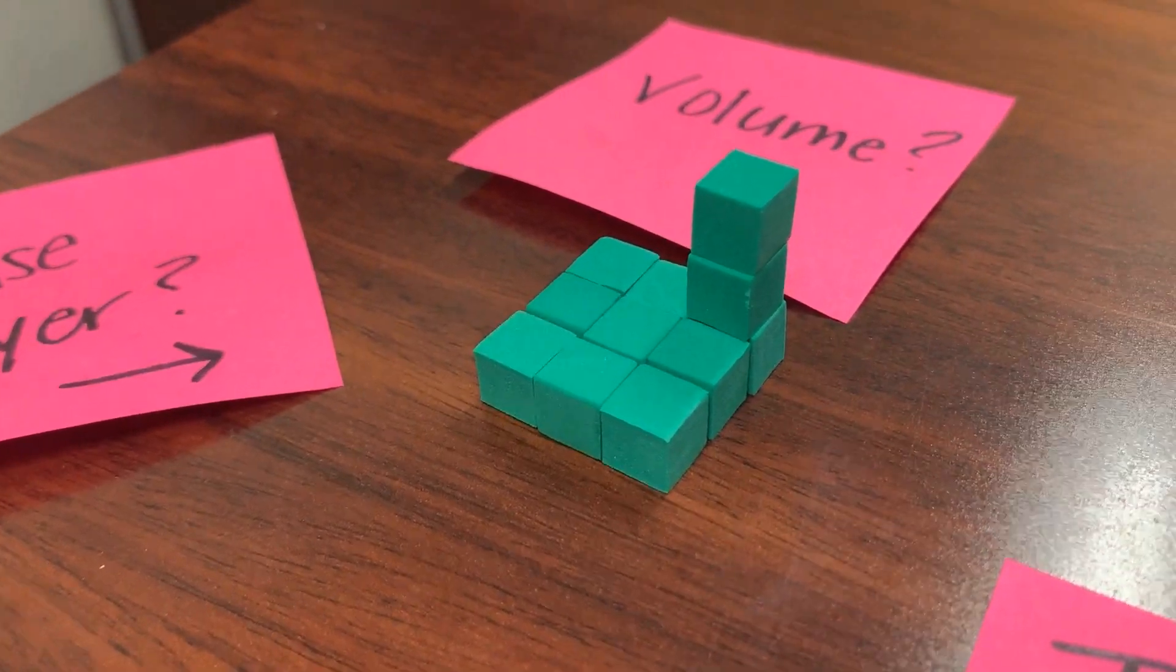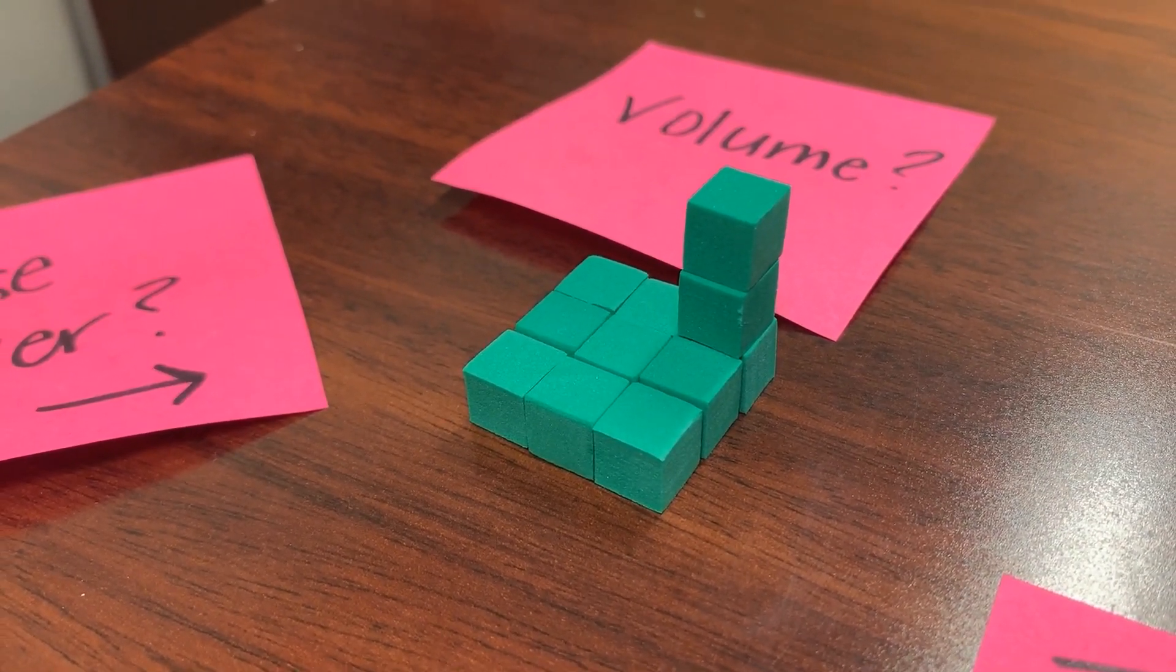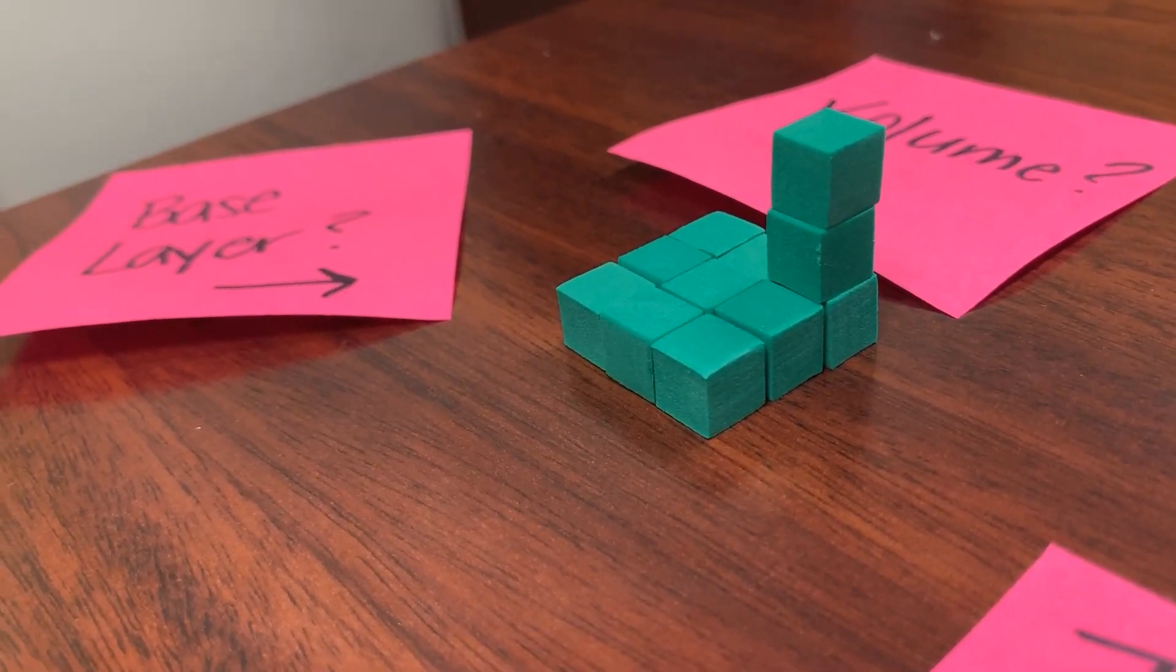How many are in that base layer? Right, nine. Three, six, nine. There are nine unit cubes on the bottom base layer of this rectangular prism.